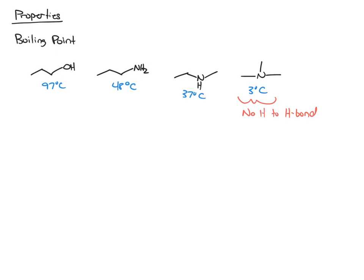Now if we look at the primary and secondary amines, these both can hydrogen bond as well as the alcohol. So that's why these all have a higher boiling point than the tertiary amine.